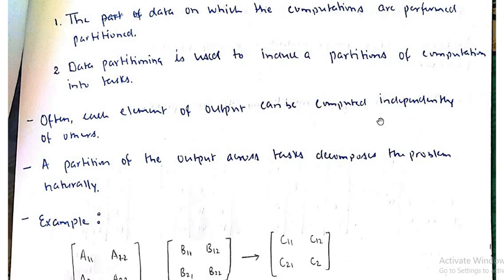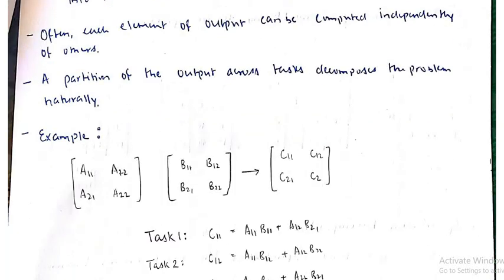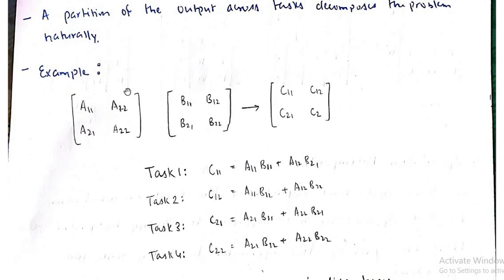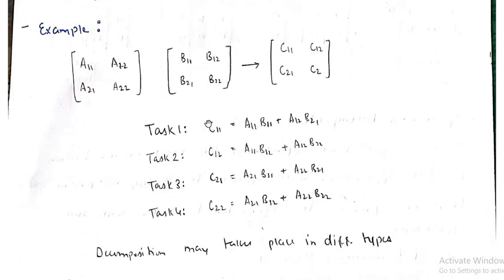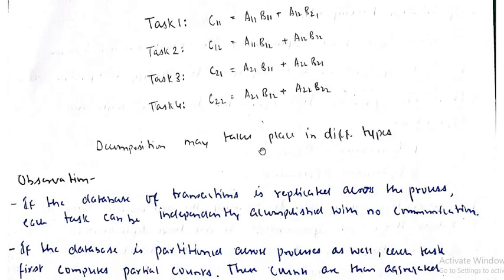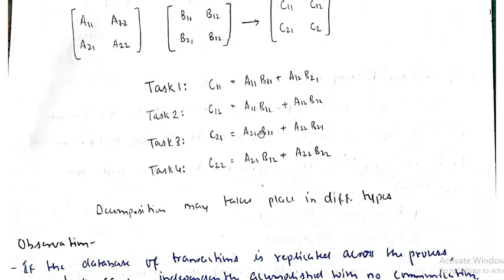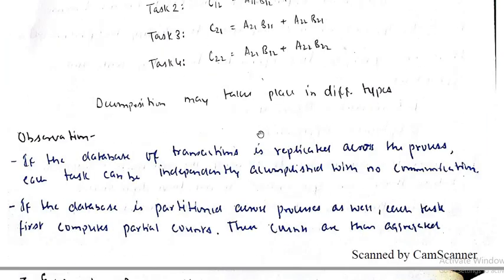For example, in matrix multiplication, we can compute each element of the output independently. The first task is to compute c11, c12, c21, c22. Then we can refine each with corresponding matrix elements like a11 and b11, break it down further, and finally write the output.